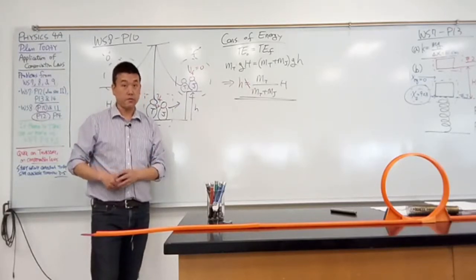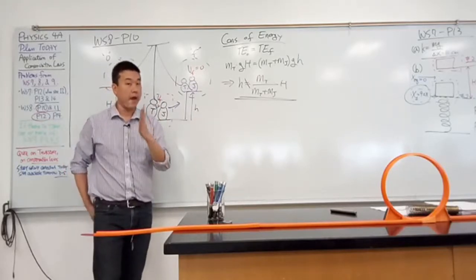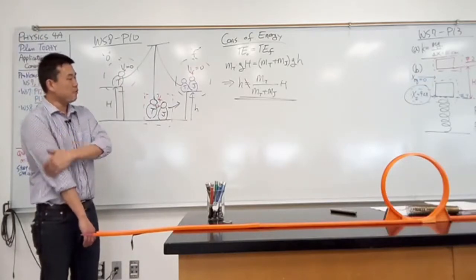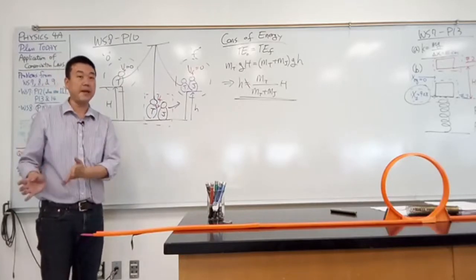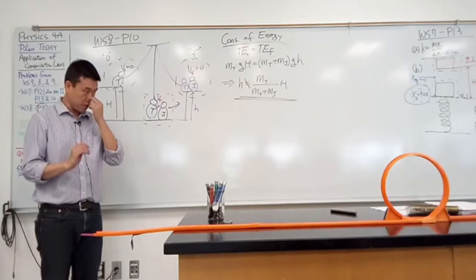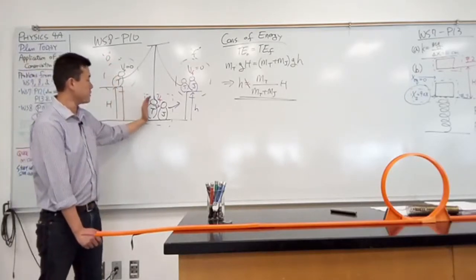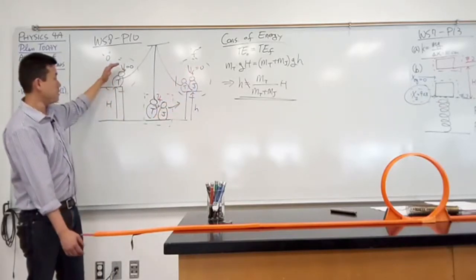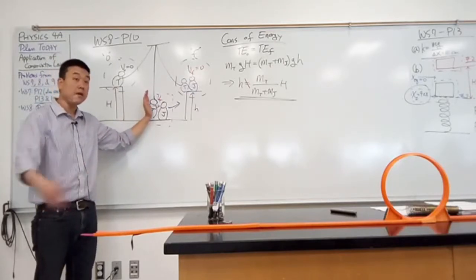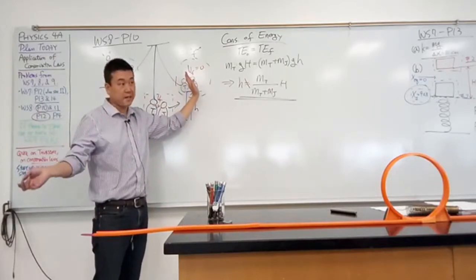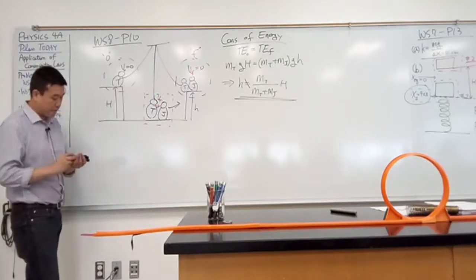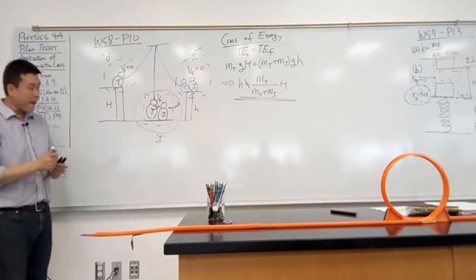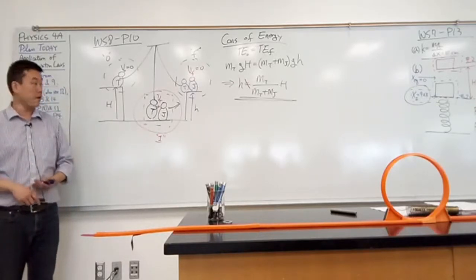Throughout this entire process, unless you slowed down and asked yourself: can I confirm that energy is conserved throughout? You wouldn't have realized you actually made a mistake - that the height is not going to be this value, it's going to be some other value. This is why I call this a trial and error approach. All problem-solving approaches are trial and error. You make a guess - that's your trial. But what's actually more important is the error portion: how to recognize when you made a mistake. This is what I call a hard error - you've made a real mistake that you never realized.